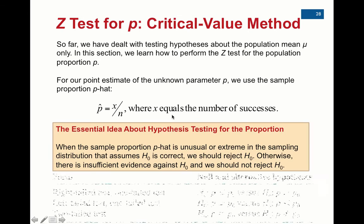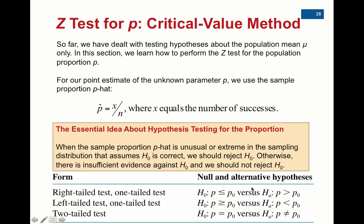Now our null hypothesis is going to basically say that p is equal to some number. Remember, I know it's using less than or greater than here, but our null hypothesis will always be that p is equal to some number.